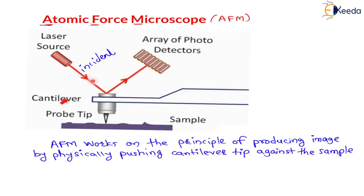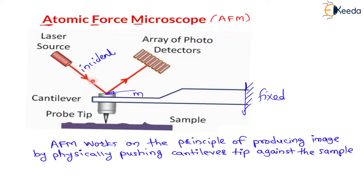On this cantilever — cantilever means it can have upward and downward motion — this side is fixed and this side is free, meaning this side can move in the downward as well as upward direction. That's why it is called a cantilever. On this cantilever there is a mirror arrangement.